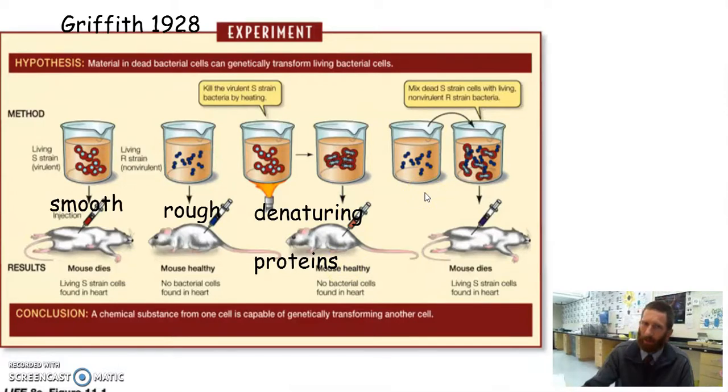Then he does something really weird. This is kind of like a, huh, that's interesting. He didn't really know what was going to happen. I doubt if he even had a hypothesis. He was just like, Hey, let's see if this works. So he takes his rough strain, which doesn't cause the mouse to die. And he takes his boiled smooth strain, which doesn't cause the mouse to die. And he mixes them together for a little while and then injects that into the mouse. And lo and behold,